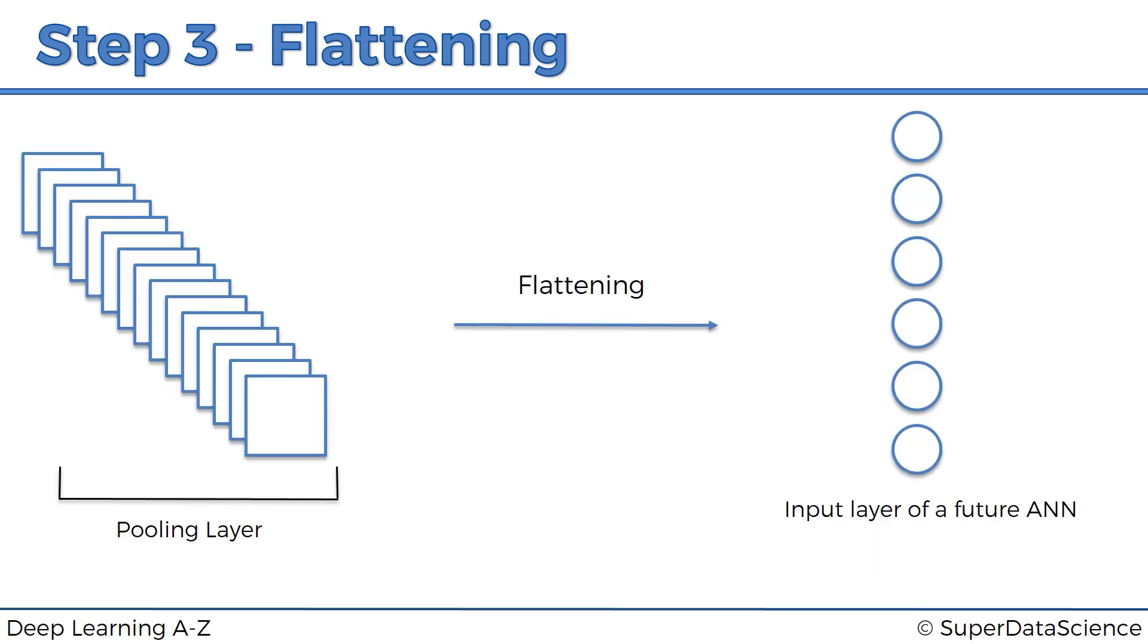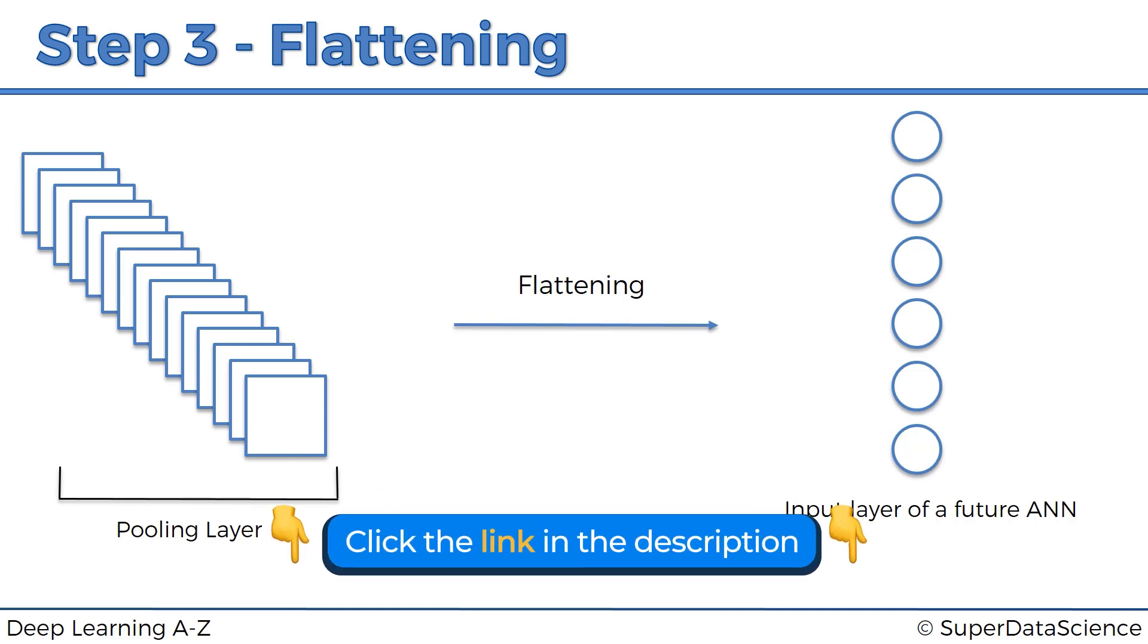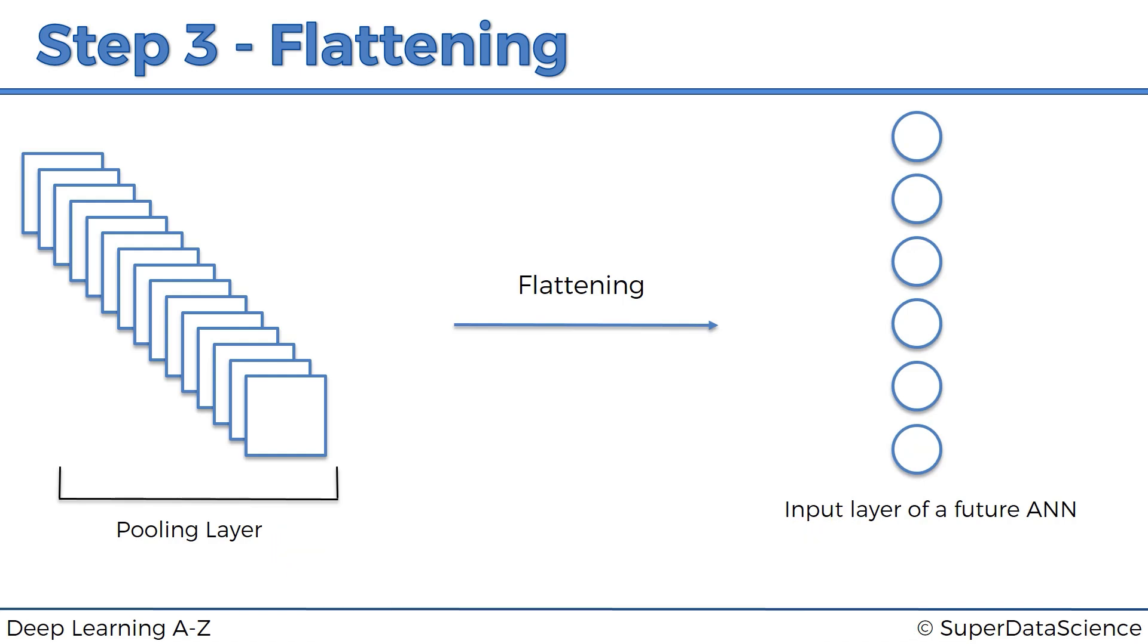So this is what it looks like when you have many pooling layers or you have the pooling layers with many pooled feature maps and then you flatten them. So you put them into this one long column sequentially one after the other and you get one huge vector of inputs for an artificial neural network.